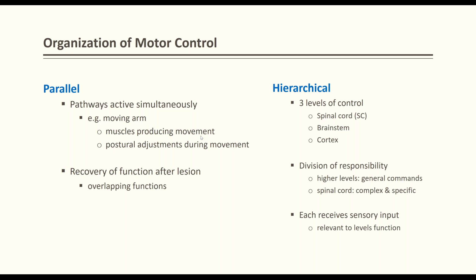Motor organ control is organized in two ways: parallel and hierarchical. In parallel organization, pathways act simultaneously — such as producing arm movement while making postural adjustments. This parallel overlap allows for recovery of function after a lesion. The hierarchical organization has three levels: spinal cord, brainstem, and cortex, with higher levels controlling lower levels. The spinal cord is complex, and each area receives sensory input to perform its function.